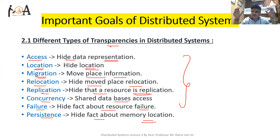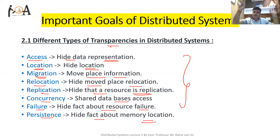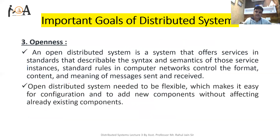We have to hide failures — if any component fails, we have to make our system capable of recovering that failure and working again as the same system. Whether there is replication or relocation of resources, resources will move from one place to another, and whatever information is required will be covered from each area. We have to hide this information from users. This is transparency.